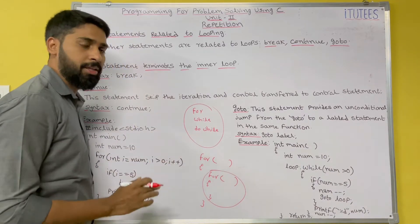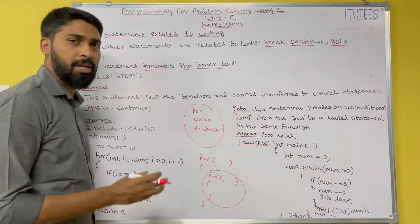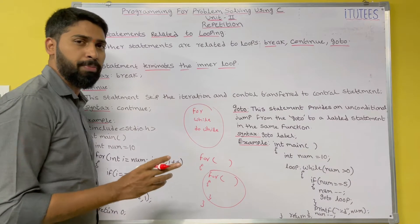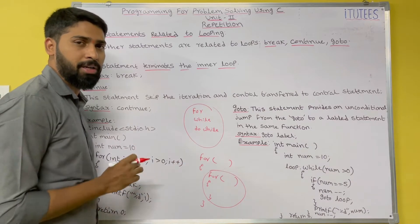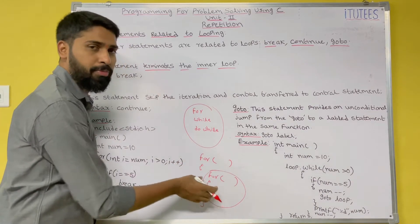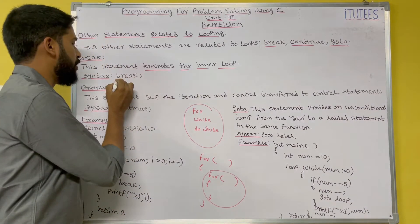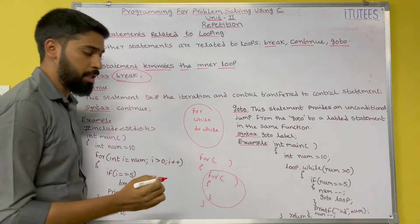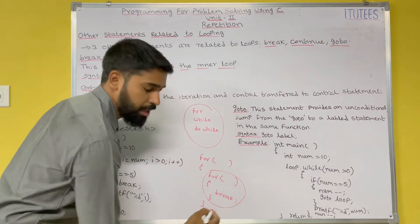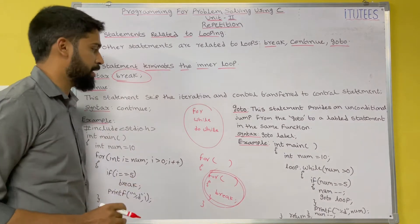If you write break in a loop, the loop will be terminated. If there is only one loop, that loop will be terminated. If there are inner loops, then the inner loop will be terminated. The syntax is simply the keyword break. If you write break, the loop will be terminated. We will discuss this with an example.